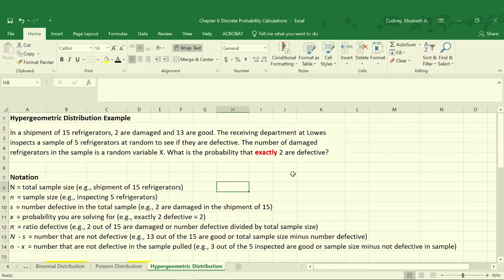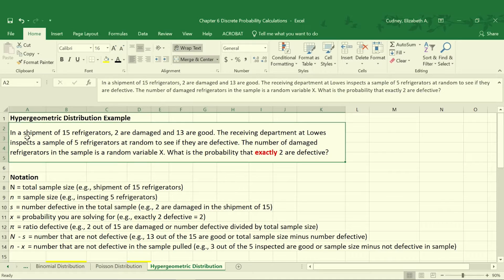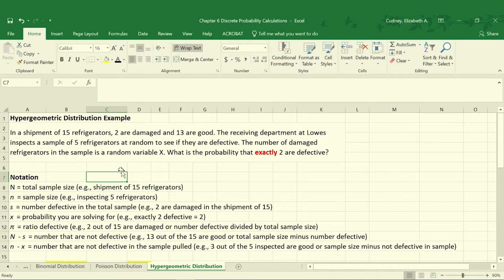In this example, we're going to take a look at a shipment of products. For this example, it's 15 refrigerators that we're receiving. Two of them are damaged and 13 are good. So let's suppose we're at the receiving department of a company such as Lowe's. They're inspecting a sample of five refrigerators at random to see if they are defective. The number of damaged refrigerators in the sample is a random variable X. We want to calculate the probability that exactly two are defective.